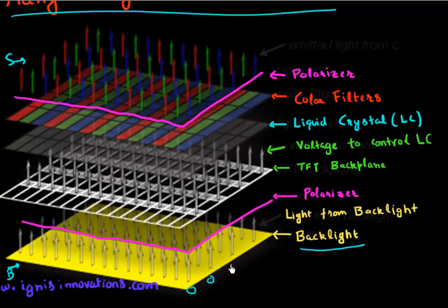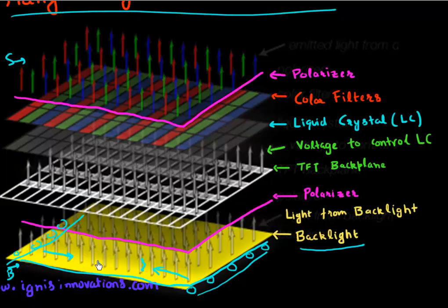The backlight could be many cathode fluorescent tubes. Or, in many tablets, these are LEDs which are placed either at the very side of the display. And then there's a diffuser which diffuses this light coming from the sides and distributes it evenly, projecting it in the upward direction. So the backlight could be powered by fluorescent tubes, or it could be powered by LEDs — even side or edge LEDs.